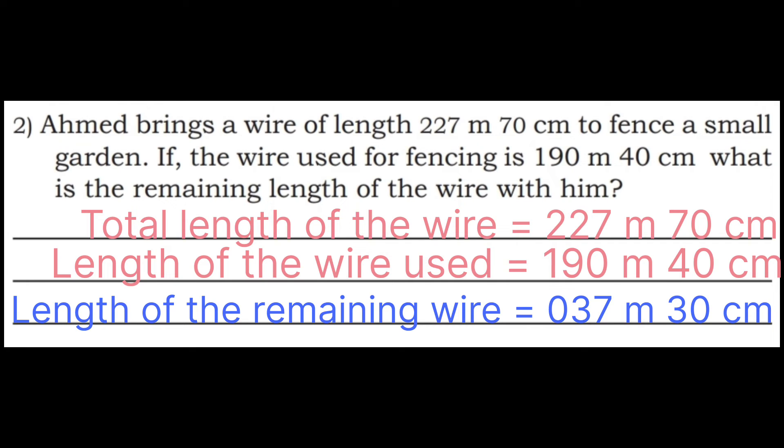Q2: 12 minus 9 is 3, 1 minus 1 is 0. Answer: 37 meter 30 centimeter.